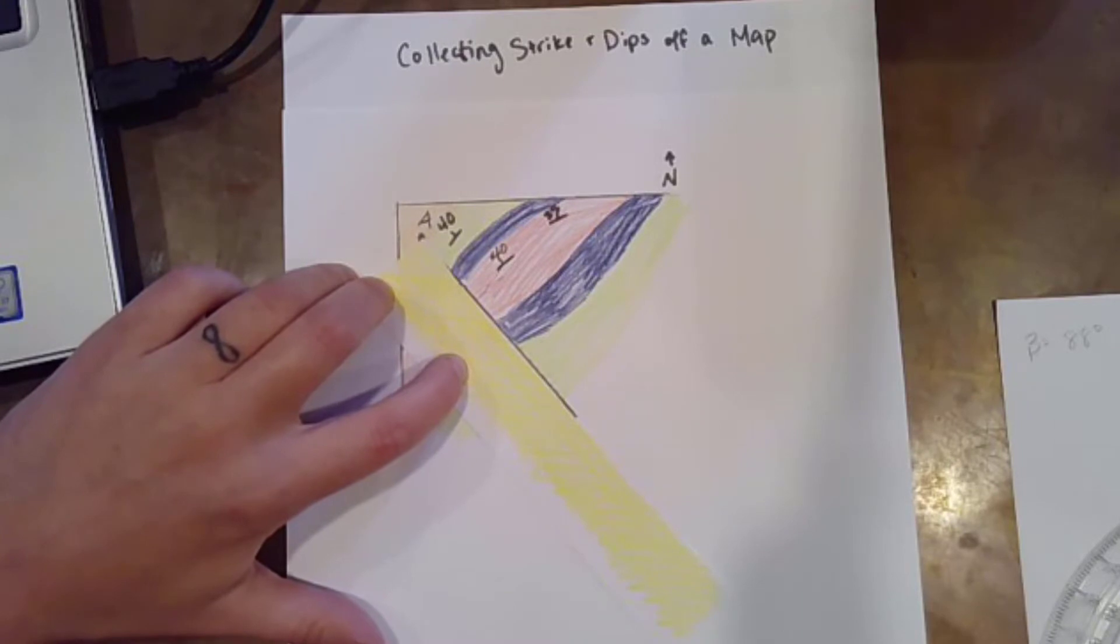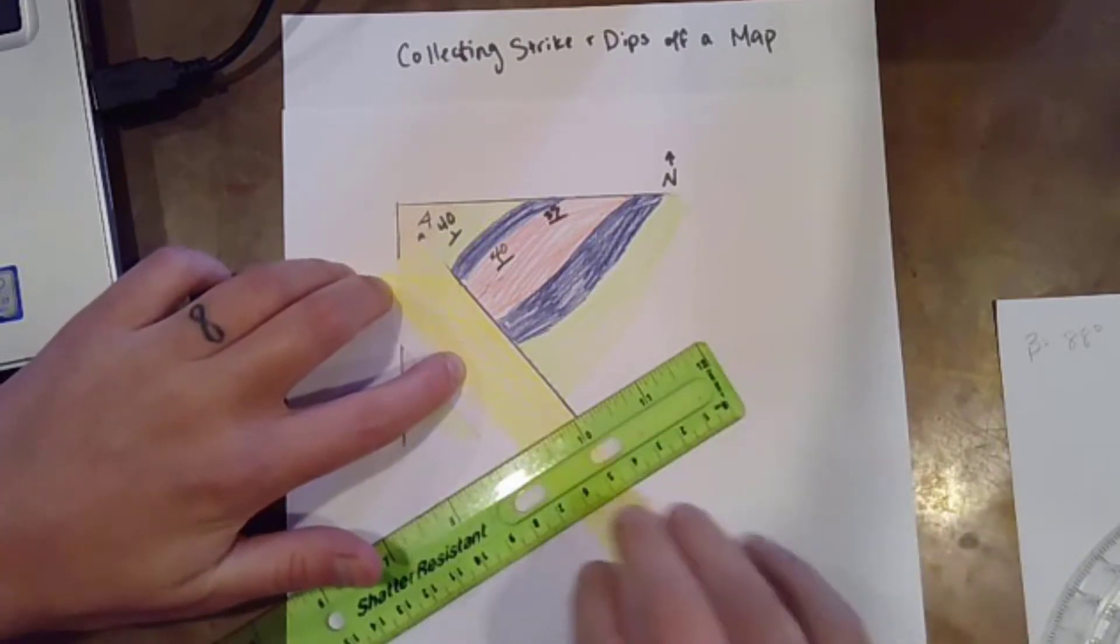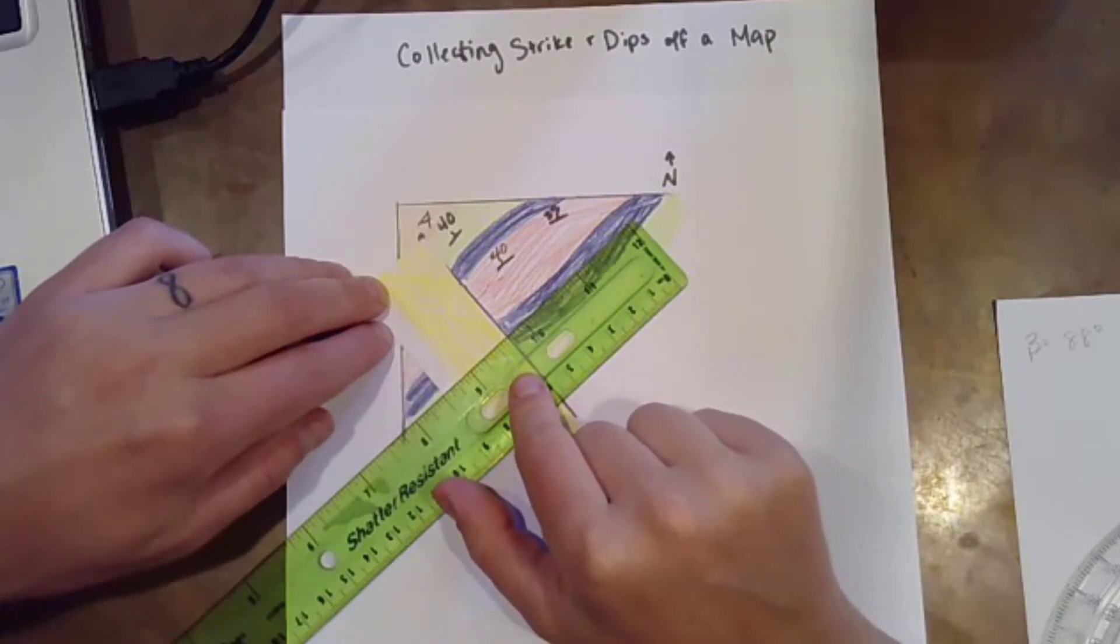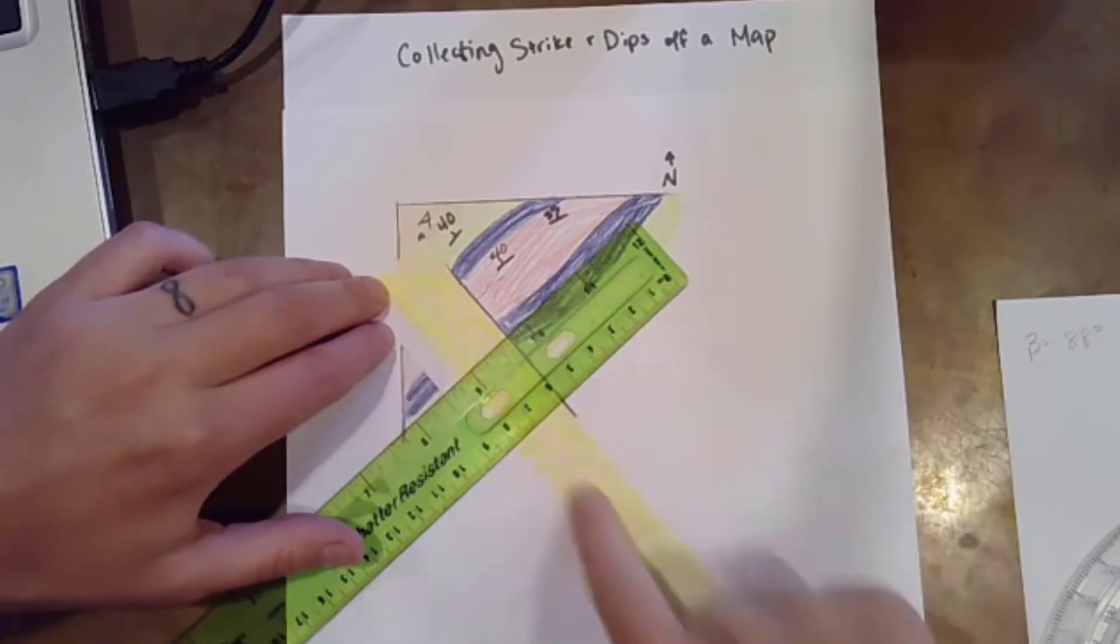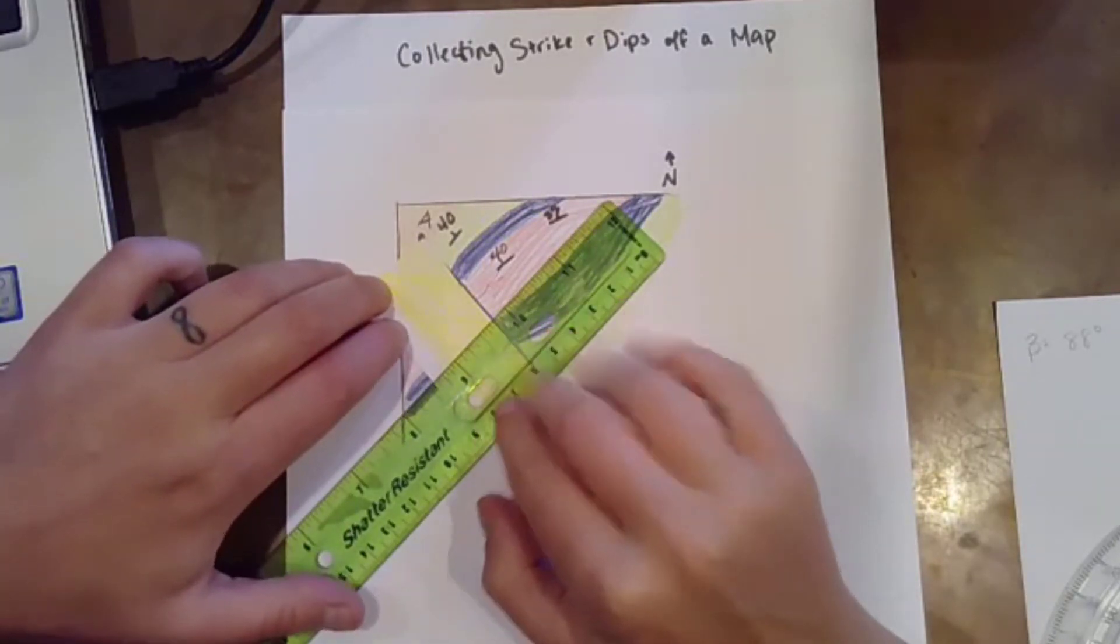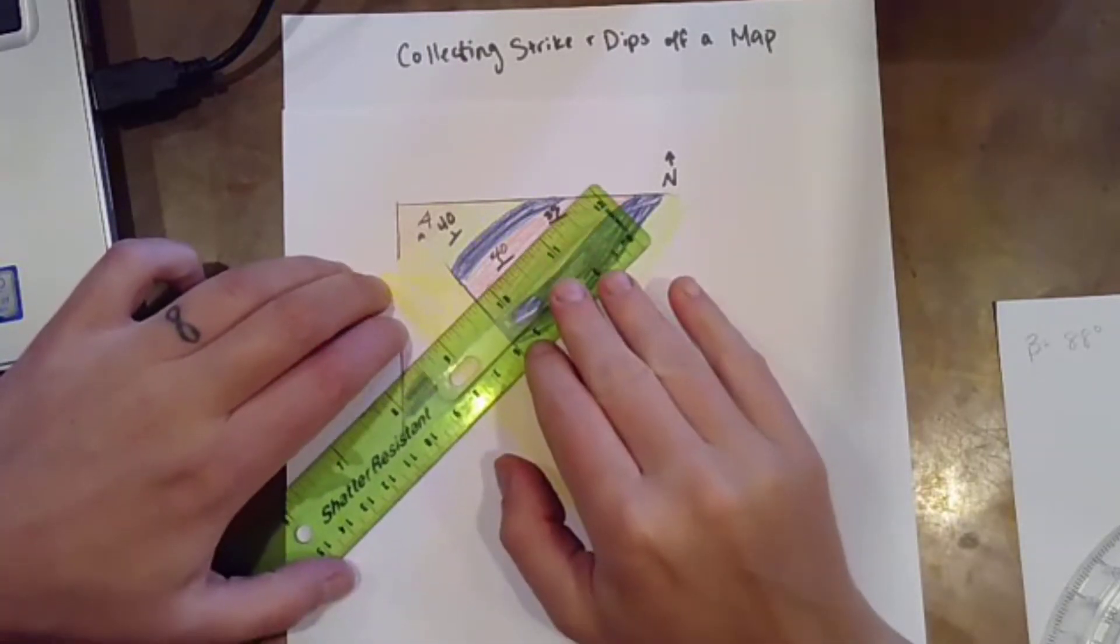The first thing I'm going to do is take my ruler and I'm going to put my ruler perpendicular to this piece of paper that I've laid down, perpendicular to my cross section line, and I'm going to mark the position of that strike and dip measurement.